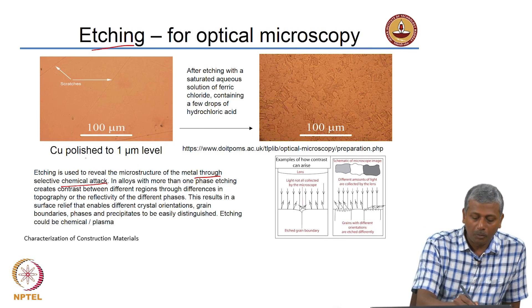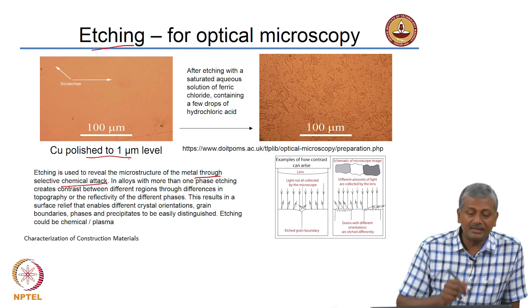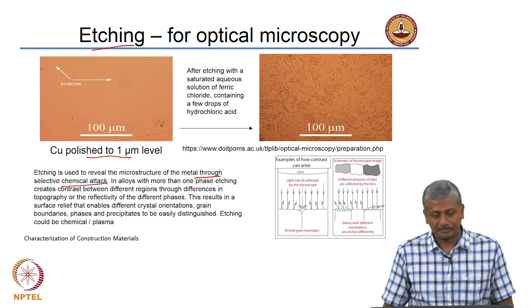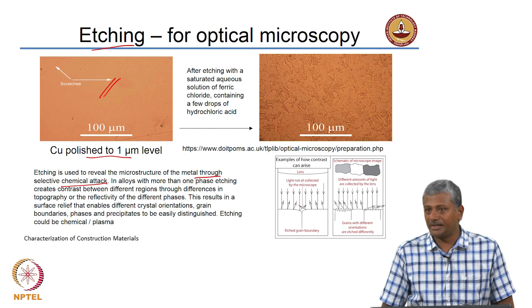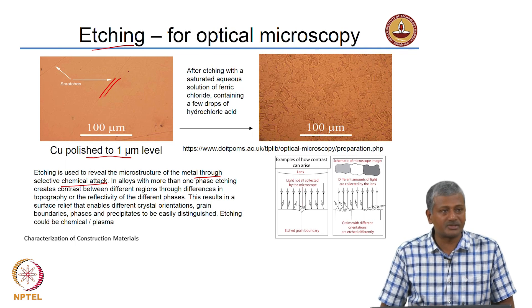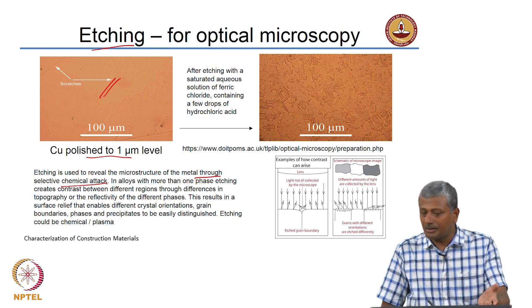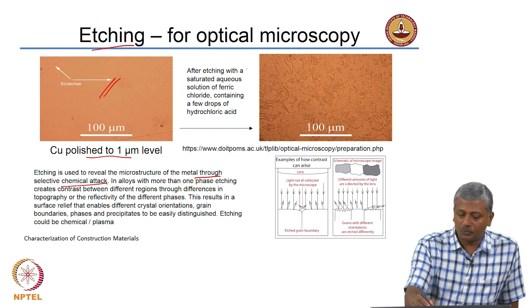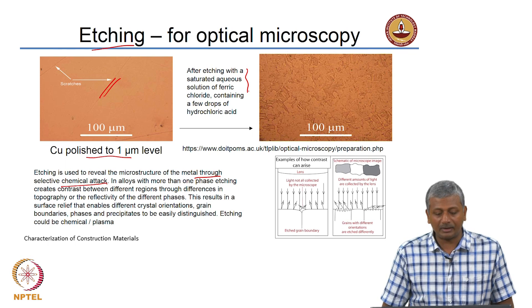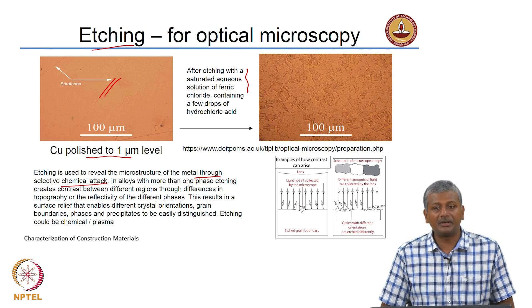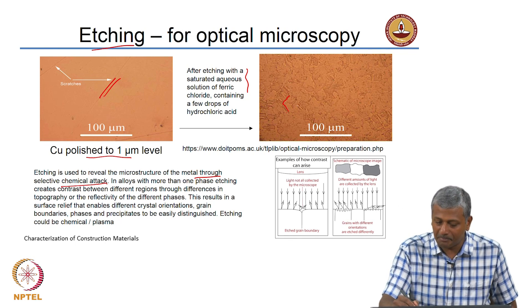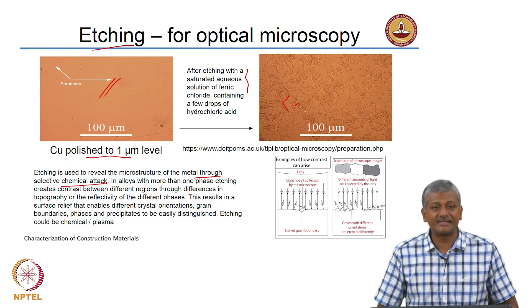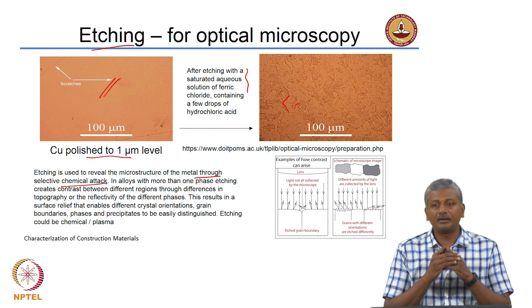For example, this is an image of copper polished to a 1-micron level as taken directly under the optical microscope. You see some scratches from the polishing — those are not grain boundaries or defects, they are simply scratches introduced by polishing. The same material after etching with a saturated aqueous solution of ferric chloride containing hydrochloric acid shows that the chemical has attacked some locations much more than others, producing crevices and pits at the boundaries between the different grains of copper.